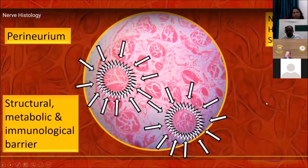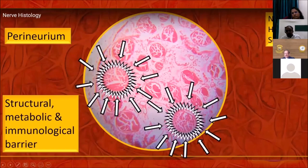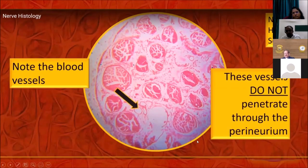This is a very interesting slide — a TSF nerve. The perineurium has been particularly highlighted because it is believed to be the metabolic and immunological barrier of a nerve. Blood vessels are never seen deep to this area, meaning blood vessels are found only exterior to the perineurium.